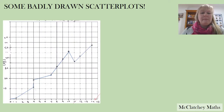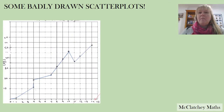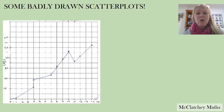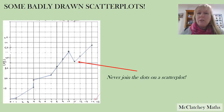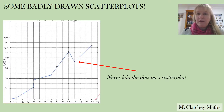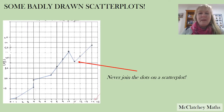In this next example we can see a very fundamental mistake that typically senior students make after they've learned about time series — they join the dots on a scatterplot. That is an absolute no-no. That is not a line of best fit. If you're asked to draw a scatterplot, never join the dots.